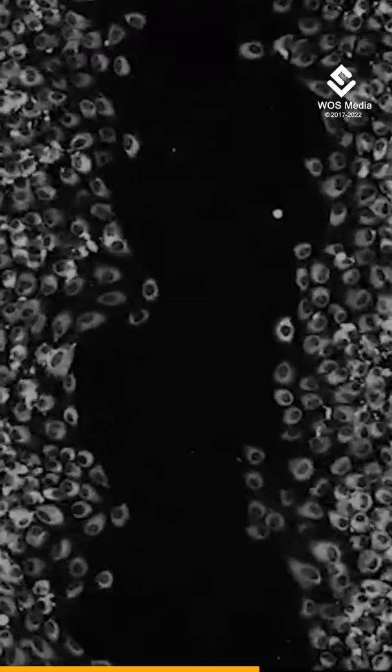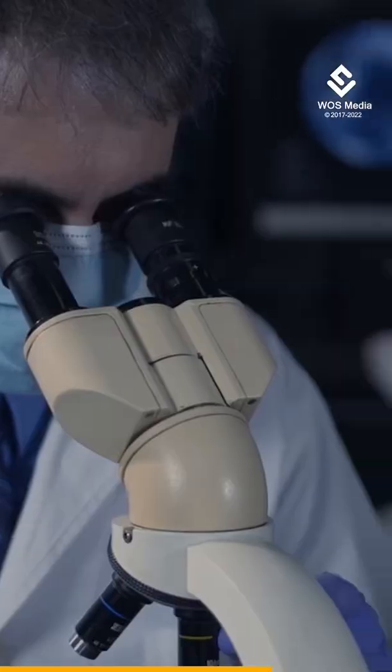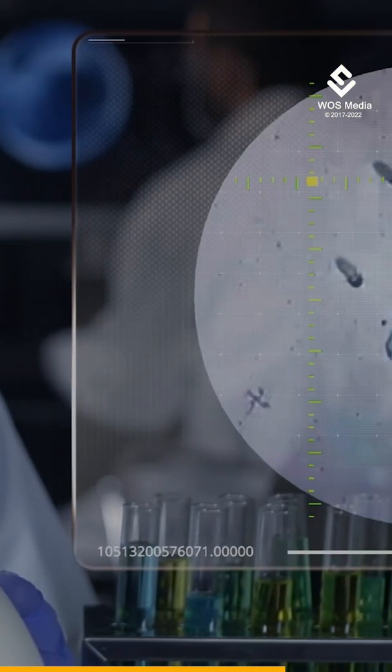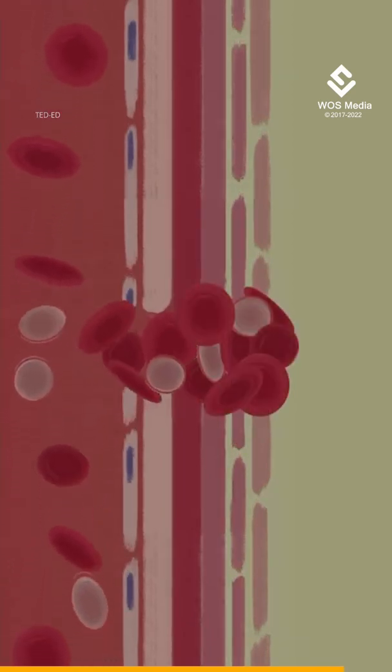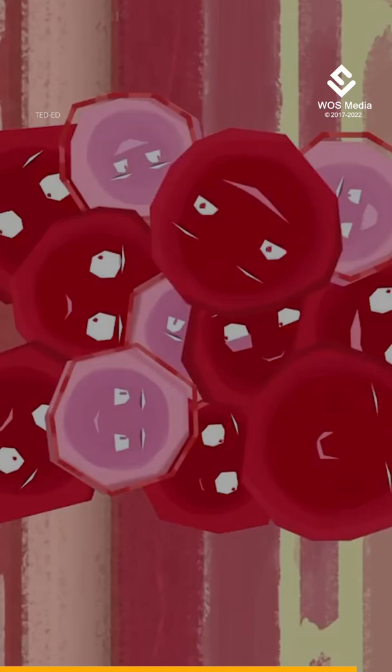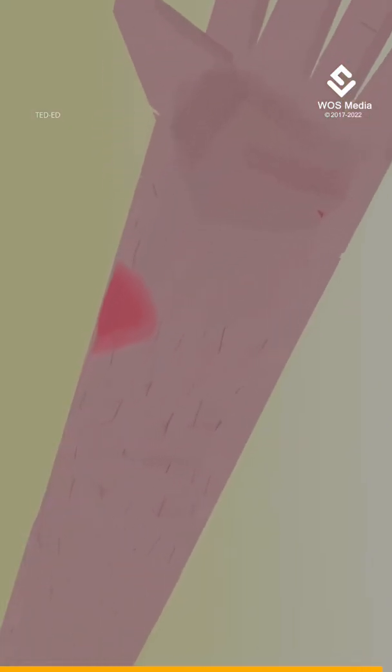Fibroblasts also move into areas that need repairing. Researchers tested the partially rejuvenated cells by creating an artificial cut in a layer of cells in a dish. They found that their treated fibroblasts moved into the gap faster than the older cells. This is a promising sign that one day this research could eventually be used to create cells that are better at healing wounds.